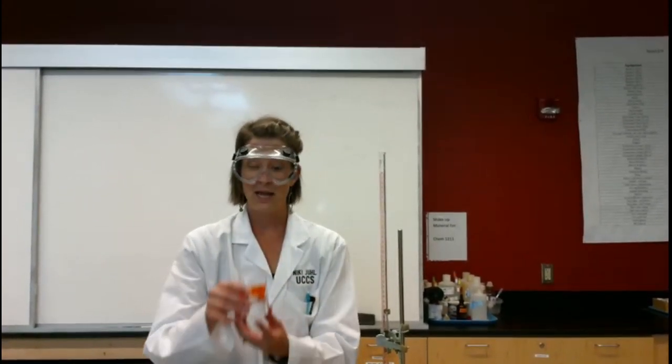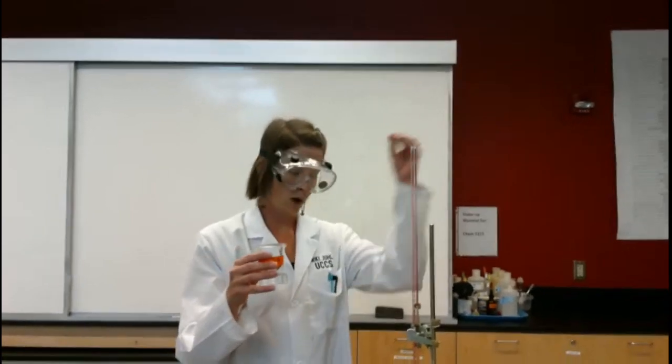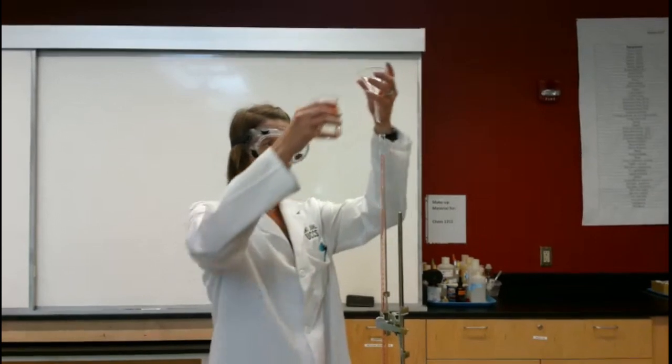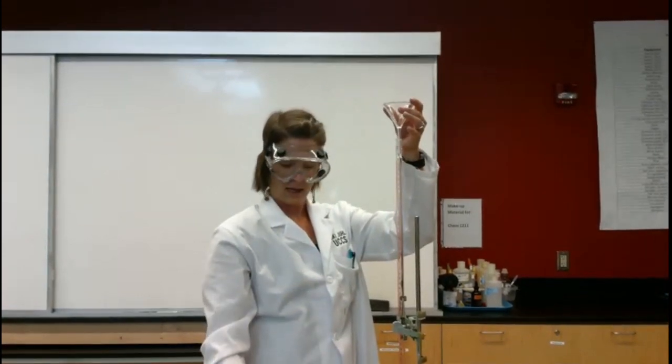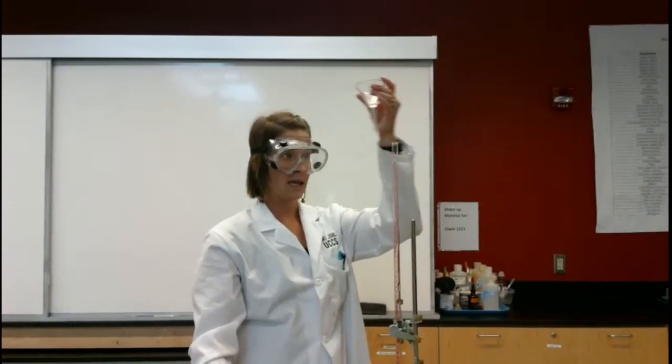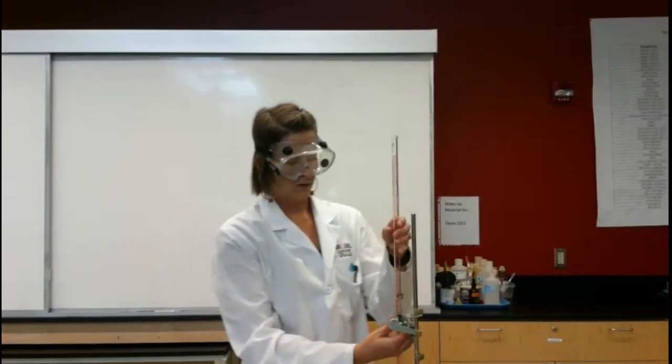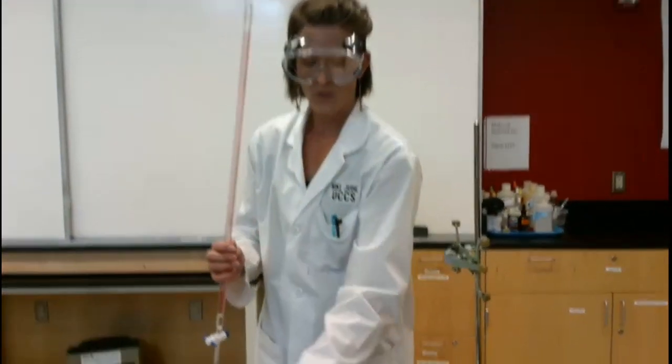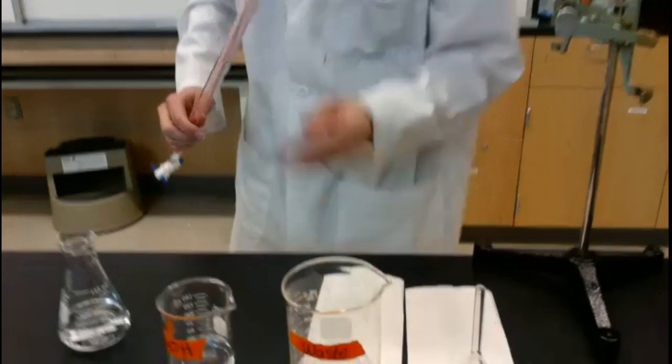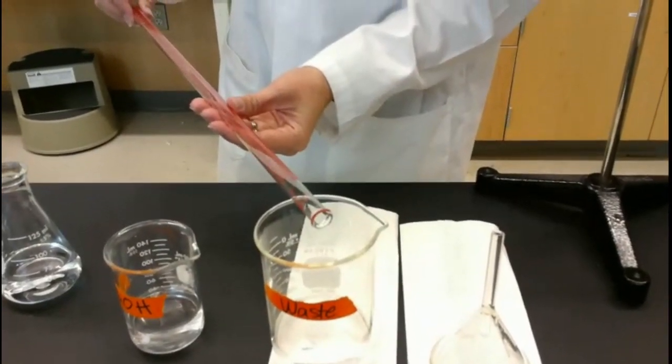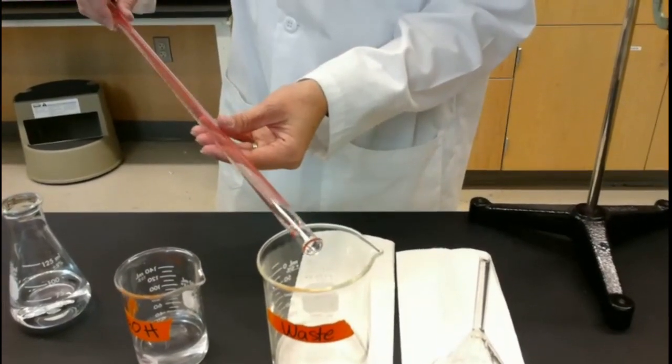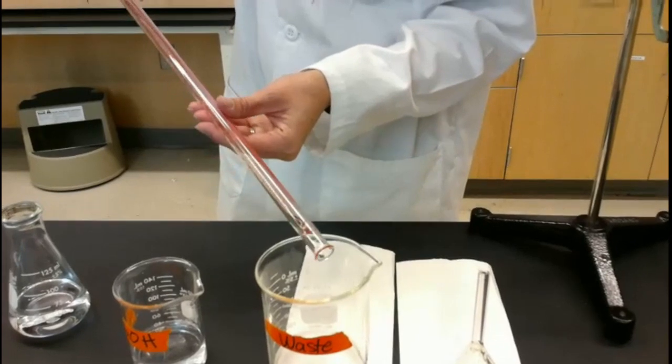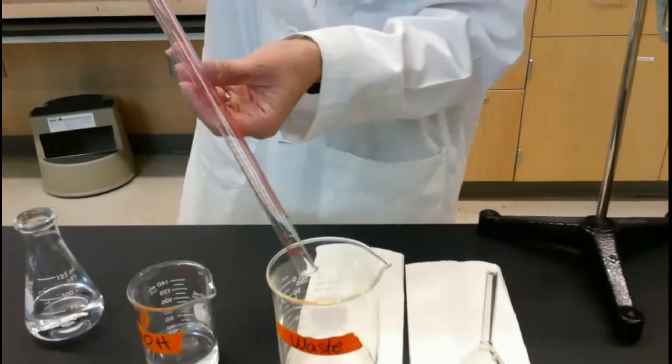So first thing I am going to do is take my sodium hydroxide. Sodium hydroxide is what we are going to be using within the burette and we are going to wash it. I am just going to add just a little bit. Once I have a little bit in there, I am going to unlatch, go to your waste beaker and as you go through you are going to spiral your burette and that is going to coat the inside of your burette with the solution in which we are using for our titration today. And that is called a wash.